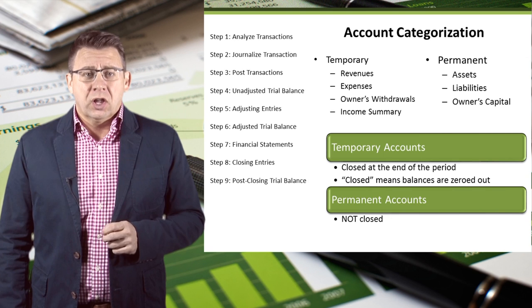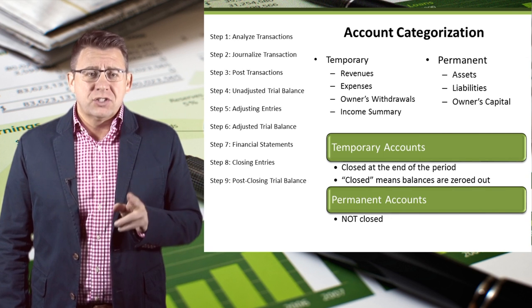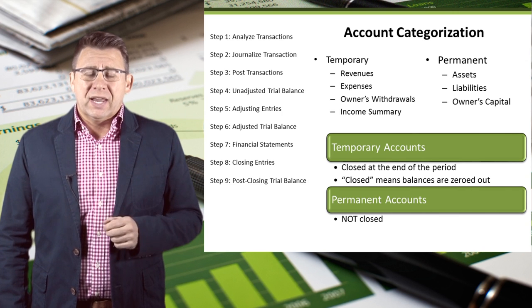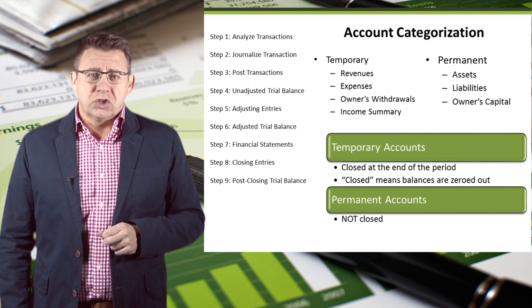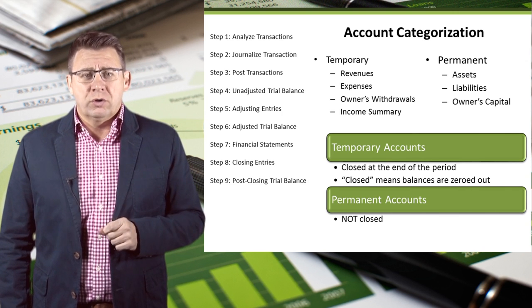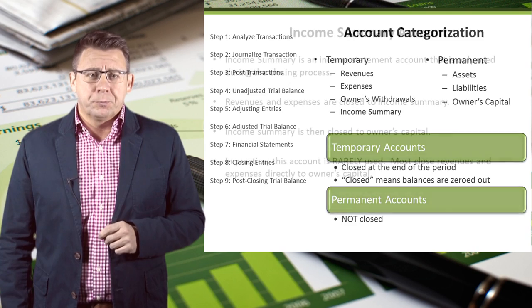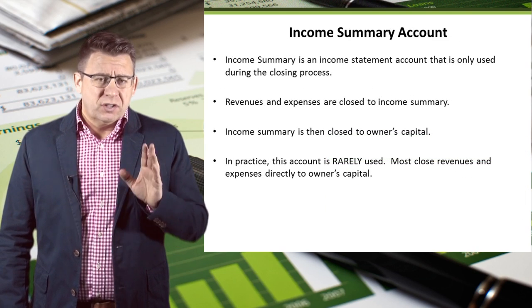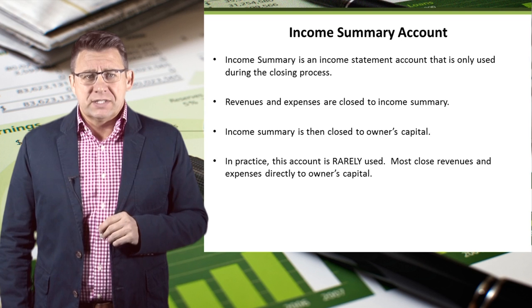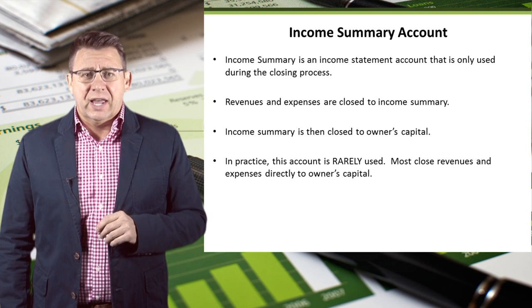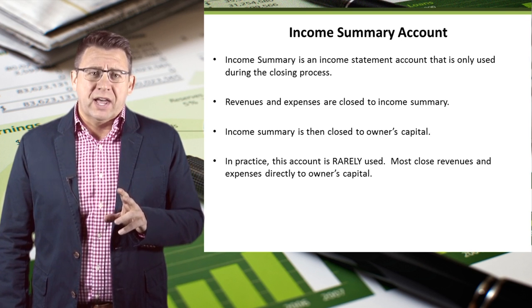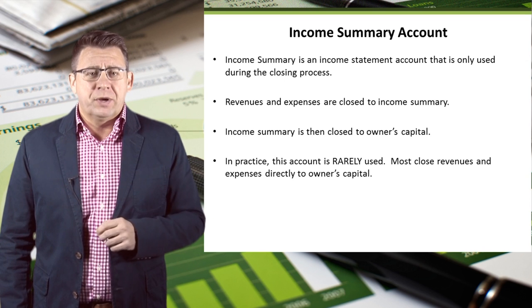Temporary accounts are closed at the end of the period — closed means to zero the account balance. Permanent accounts are unaffected by closing journal entries, with the exception of owner's capital. The income summary account, which is a new account for us, is a transitional account into which all revenues and expense accounts are transferred at the end of the period.